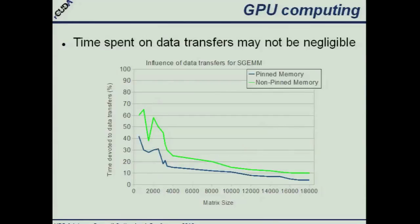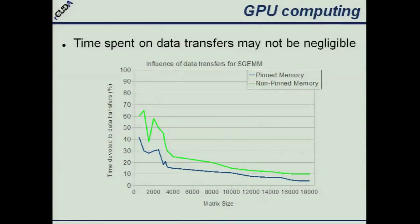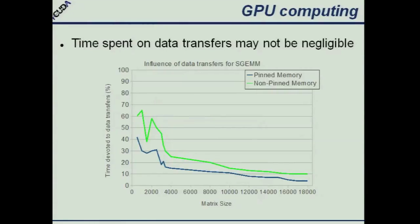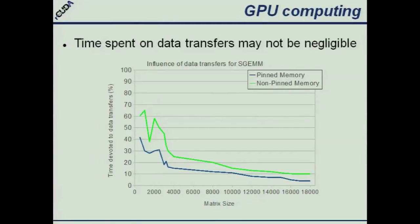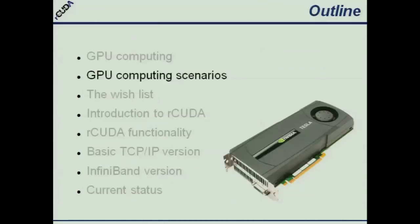These transfers take time. Depending on the exact data we are transferring, we may have more or less overhead. I'm showing the overhead for a matrix-matrix multiplication. We can see that as the matrix size is larger, the relative overhead is smaller. For very small matrix sizes, the percentage of time devoted to data transfer is really high, so we should not use GPUs for these small matrix sizes.